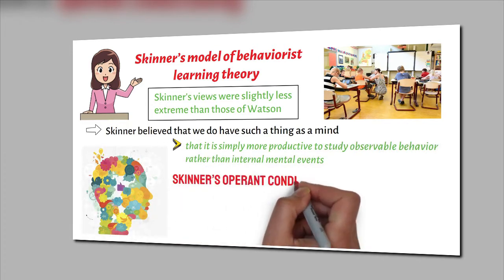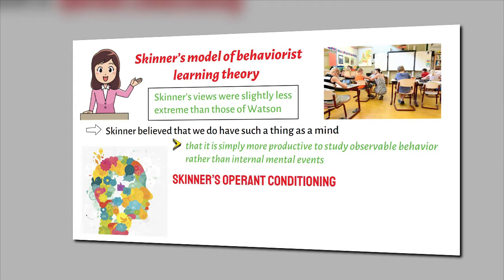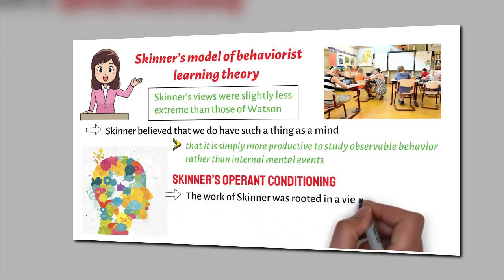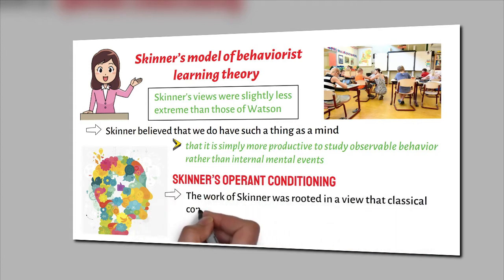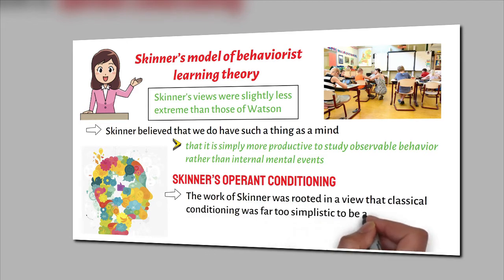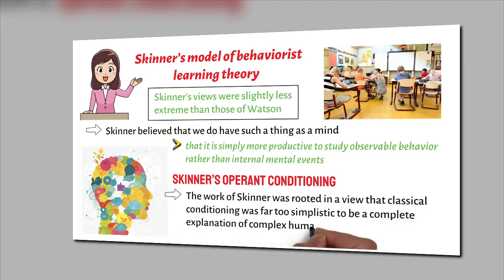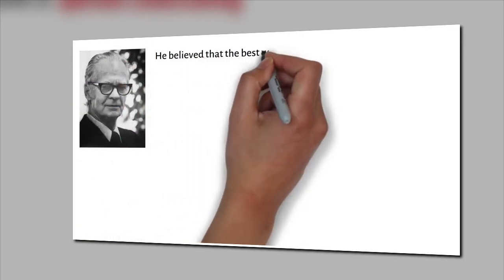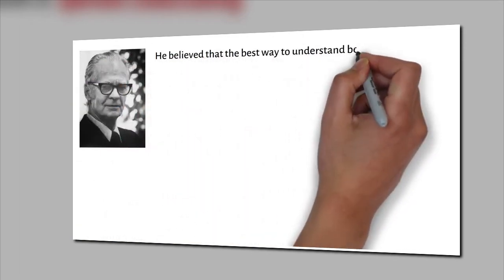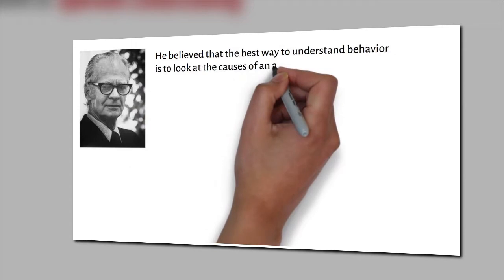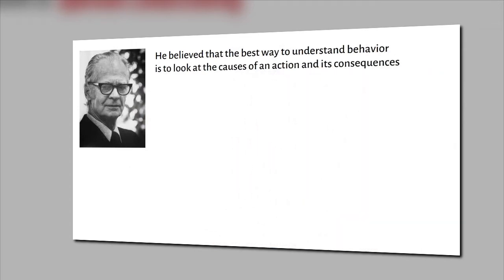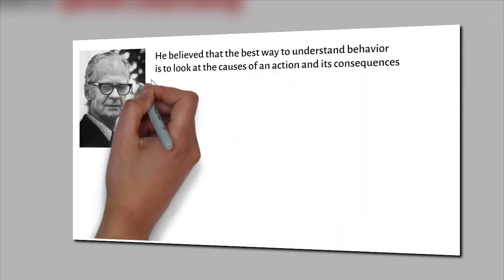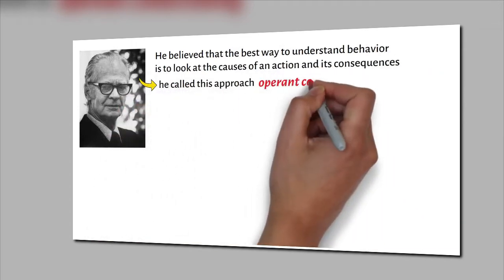Skinner's Operant Conditioning. The work of Skinner was rooted in a view that classical conditioning was far too simplistic to be a complete explanation of complex human behaviour. He believed that the best way to understand behaviour is to look at the causes of an action and its consequences. He called this approach operant conditioning.